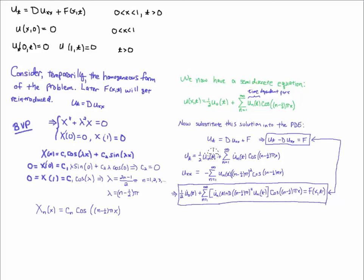Substituting into the PDE, I get (1/2)u̇_0 plus the sum with the cosine factored out containing u̇_n and u_n. The minus sign from -u_xx combined with the minus from differentiating cosine twice produces a plus sign, and I insert the diffusivity constant d. That gives me the full substituted form of the PDE equal to f(x,t).